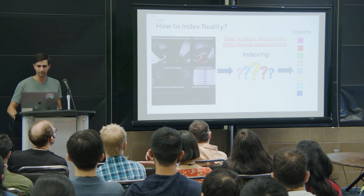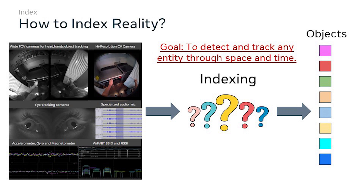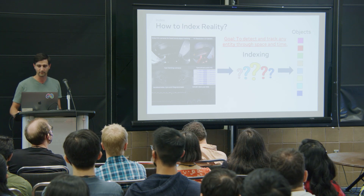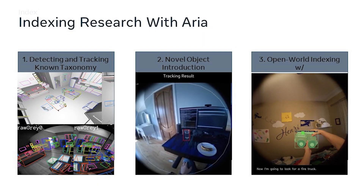Revisiting our goal of indexing, we can now define it as detecting and tracking any entity through space and time. When I say entity, I mean anything defined previously as a semantic object, like the categories in MS COCO, or anything defined by a user as an object. This latter point is really important for egocentric data — there are numerous objects we encounter every day that you can't put a category label on. The value of allowing user-defined objects fundamentally separates egocentric machine perception from other domains like autonomous driving, where the list of objects to index is relatively finite and well-defined: stop signs, lane markers, pedestrians, that kind of thing.